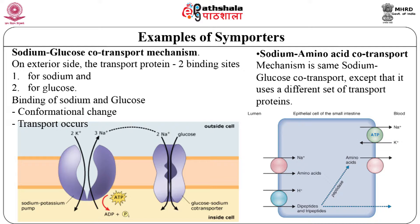In contrast, the driving ion and driven molecule move in opposite directions — for example, the Na+/Ca2+ exchanger. It is found in cardiac muscle cells and elsewhere in the body. It transports 3 Na+ ions into the cell in exchange for 1 Ca2+ ion transported out of the cell.